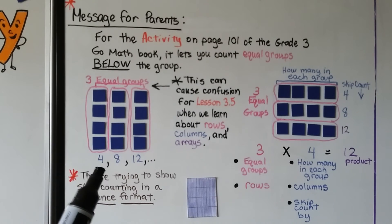So here's my message for parents. If you're following along in the Go Math book for the activity on page 101 of the Grade 3 Go Math book, it lets you count equal groups below the group. They're just trying to show skip counting in a sentence format by going horizontally, four, eight, twelve. And they're showing the equal groups this way, so they're circled this way. Well, this can cause confusion for Lesson 3.5 when we learn about rows, columns, and arrays.